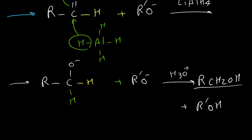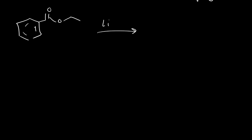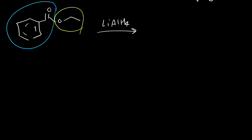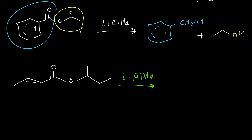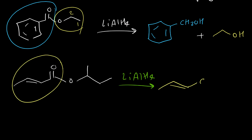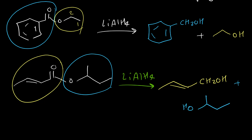The carbonyl group and its attachment convert to one primary alcohol, and R′ converts to another alcohol. Example: ethyl benzoate reacted with LiAlH4 — the carbonyl part converts to a primary alcohol (CH₂OH), and the ethyl part (two carbons with oxygen) converts to ethanol. Another example with LiAlH4: the carbonyl group becomes CH₂OH, and the second part retains its structure with OH added to the oxygen. The C=C double bond does not react with LiAlH4 in any of these examples.